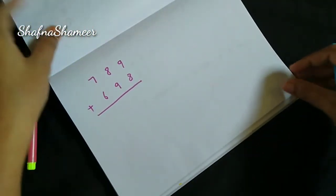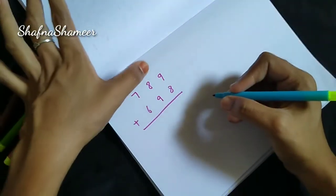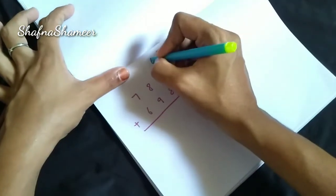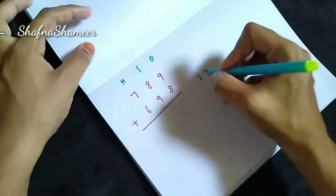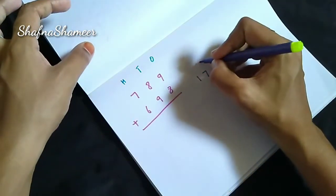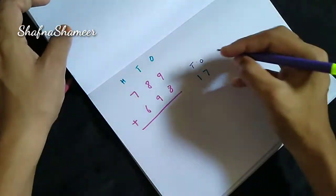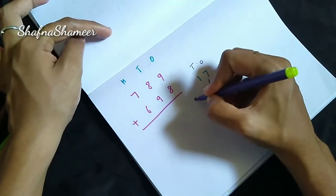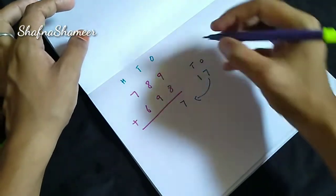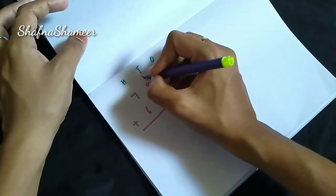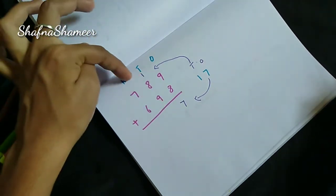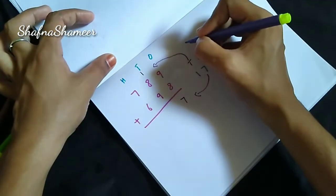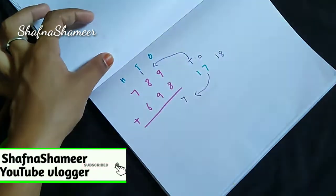This is one of the three digit examples. Now: 9 plus 8 is 17. 17 is here — ones, tens. This is the ones position: 7. This is the tens position: 1. Then 1 plus 8 plus 9: 1 plus 8 is 9, and 9 plus 9 is 18. Then 18.